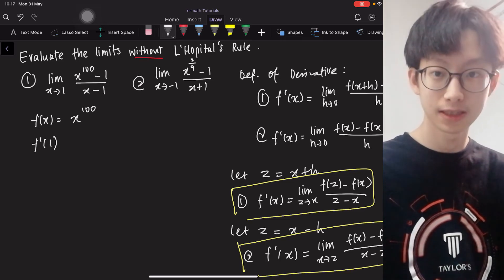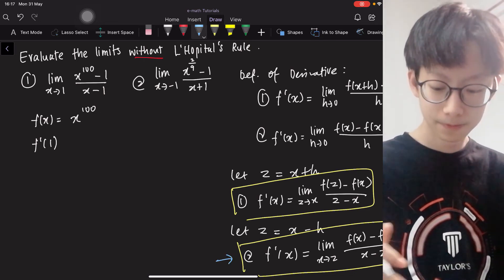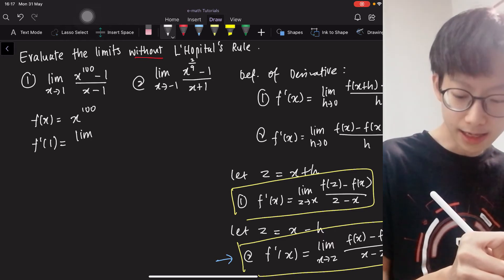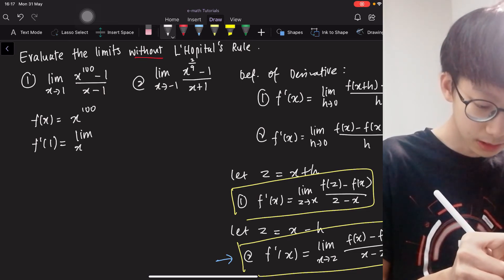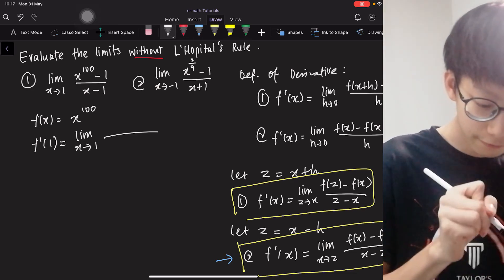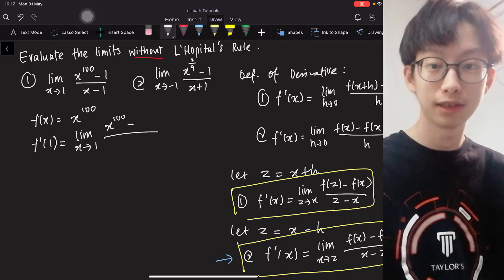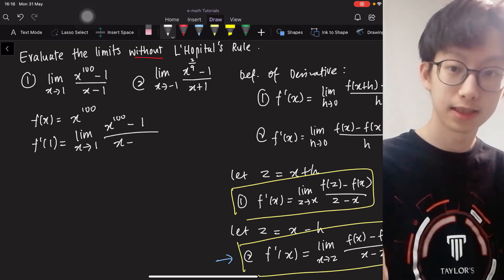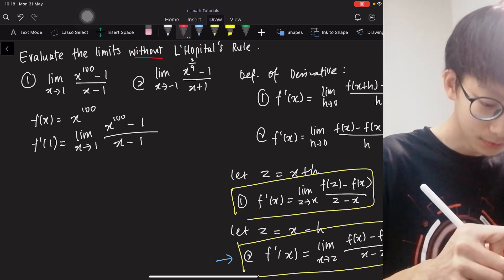Because our z is 1. So let me show you, I think I will use the second formula here. It is the limit as x approaches 1 of f(x) is x^100, minus f(1), it is 1 to the 100, which is still 1. Then x is still x, z is 1. So this is actually the same. This is actually the derivative of this function.